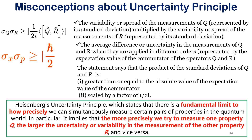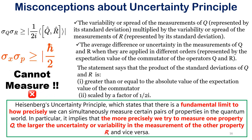The product of standard deviations of Q and R is greater than or equal to the absolute value of the expectation value of the commutator, scaled by 1/2i. Heisenberg's uncertainty principle states a fundamental limit to how precisely we can simultaneously measure certain pairs of properties in the quantum world. When we measure one property Q more precisely, the larger the variability in measuring property R, and vice versa. We should be careful not to use the phrase 'cannot measure.'